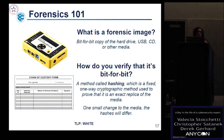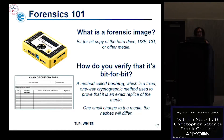A forensic image is a bit-for-bit copy of a USB, CD, hard drive, or whatever you're imaging. To verify a forensic image we use hashing — a one-way cryptographic method used to verify the integrity of the media. Unfortunately, one small change to a file can change the hash value, which can make your case harder to prove in a court of law if you're trying to show the evidence is intact from its original form.